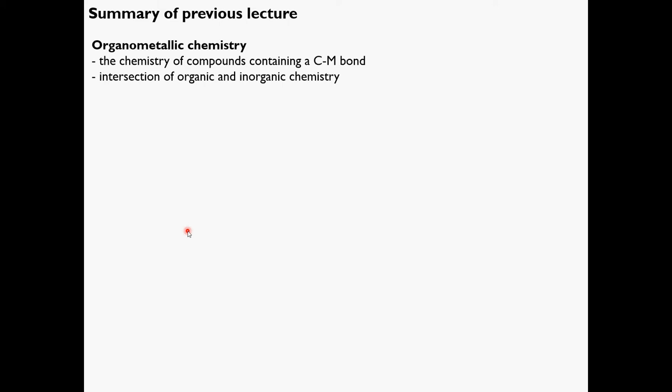Before we get on to the new material, I just want to summarize what we said in the previous lecture. I defined the broad scope of organometallic chemistry as being the intersection of organic and inorganic chemistry — the study of carbon-metal bond-containing species. The real message was that it allows synthetic chemists to perform reactions that are very difficult to do using classical organic chemistry reactions.